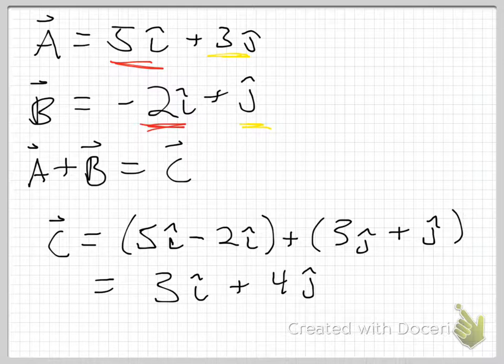3î + 4ĵ, which means C moves over 3 units in the x-direction and up 4 units in the y-direction. Now here's the real test. I've already done this problem graphically. Let's go look at the graph, go look at the picture, and make sure that C really is 3î + 4ĵ.